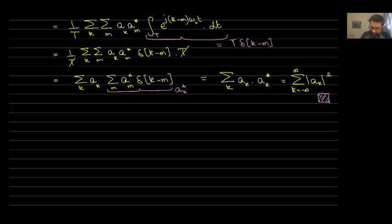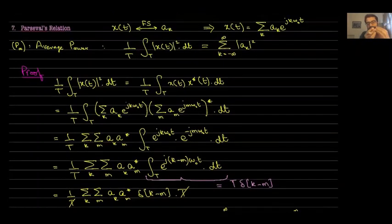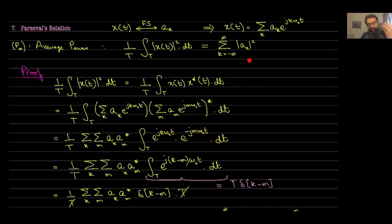To make things clear: K and M both go from minus infinity to plus infinity. What Parseval's relationship is saying is that if you want to compute the average power in a periodic signal, you can either integrate in the time domain, or simply compute the Fourier series coefficients. If you have those coefficients, all you need to do is take the absolute value squared of each coefficient and sum them up — that sum gives you the average power.